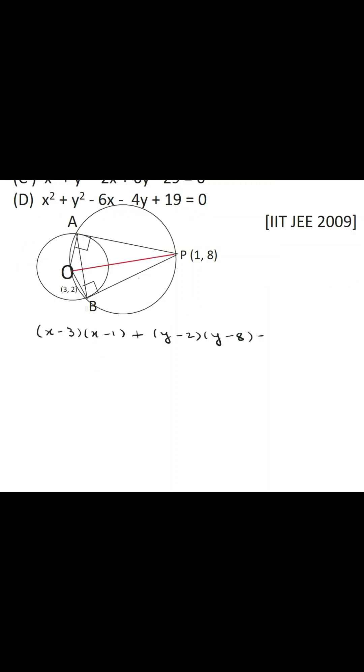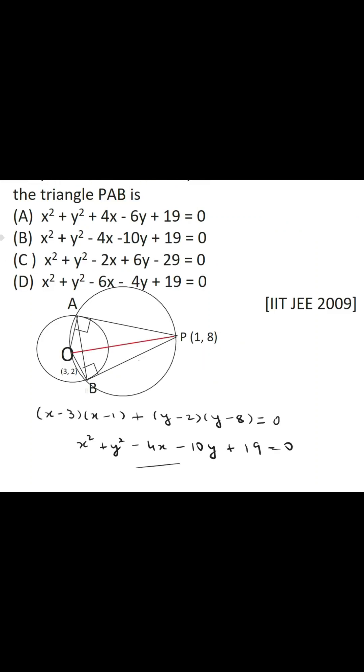The equation is (x - 3)(x - 1) + (y - 2)(y - 8) = 0. So this is the equation of the circle as required by the question, option B of this question, which is correct.